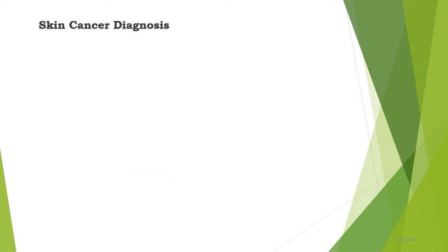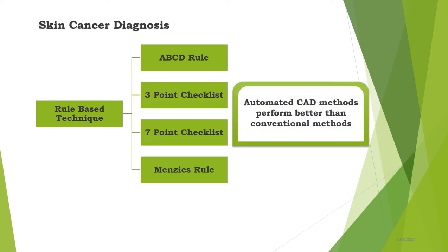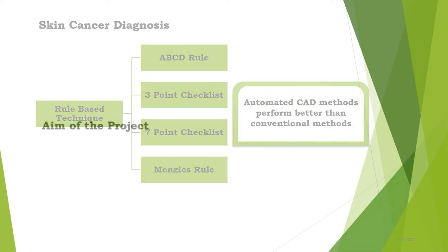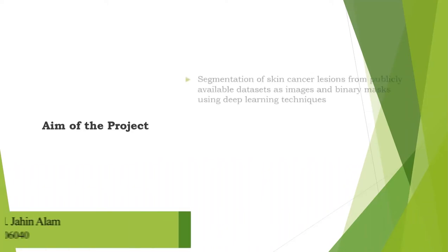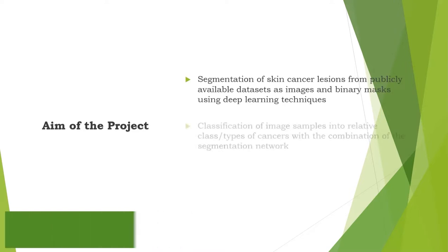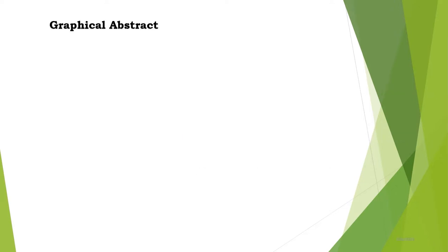Dermatologists employ conventional rule-based techniques for skin cancer diagnosis, but this process is difficult, time-consuming, and erroneous. So automated CAD system-based deep learning methods are getting popular. The aim of our project is to segment skin cancer lesions from publicly available datasets, classify those images in combination with the segmentation network, and illustrate the efficacy of both segmentation and classification.